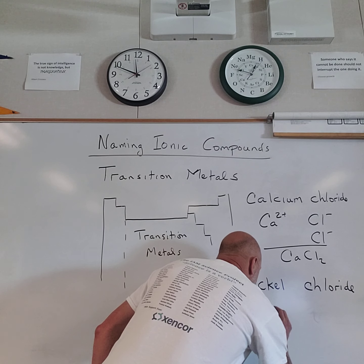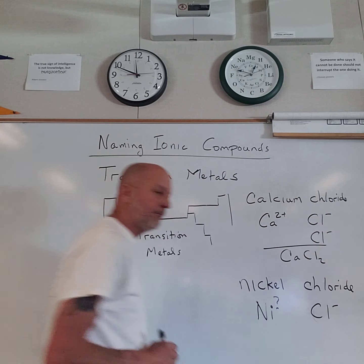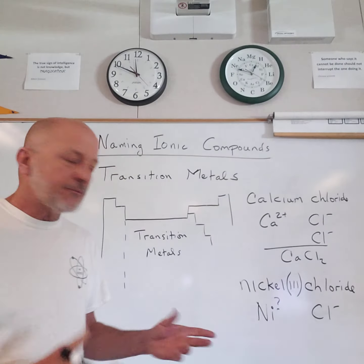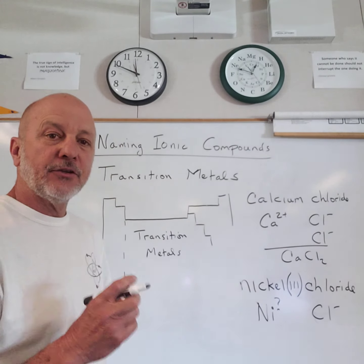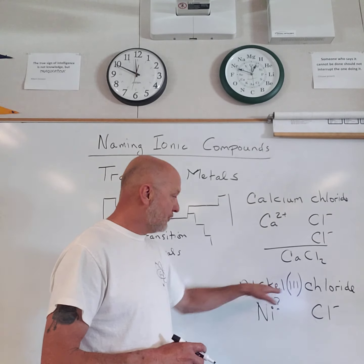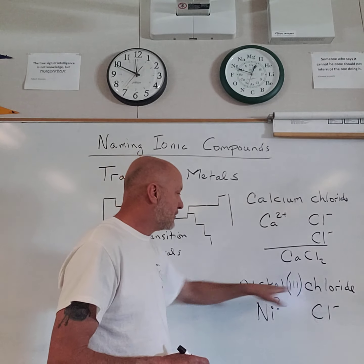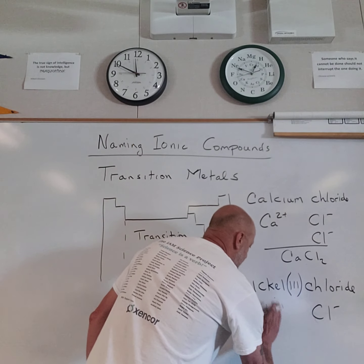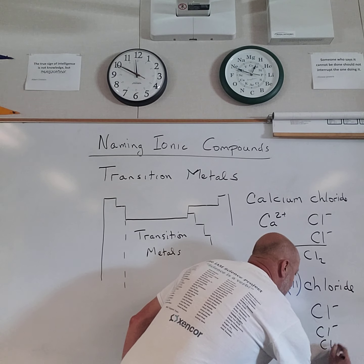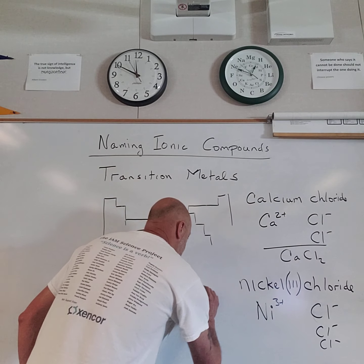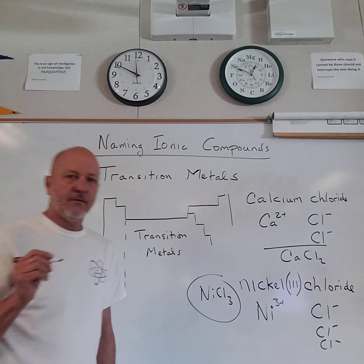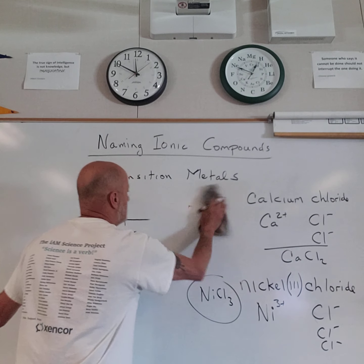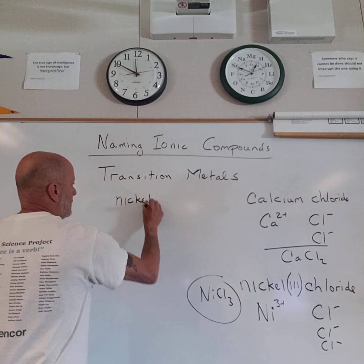So I need to do one more step. Nickel's charge is unknown; chloride we do know — it's always minus one. What we do is put a Roman numeral after the metal name. If nickel has a three-plus charge in this compound, we write nickel(III) chloride. Nickel is three-plus, so I need three chlorides to balance it. The formula for nickel(III) chloride is NiCl₃.